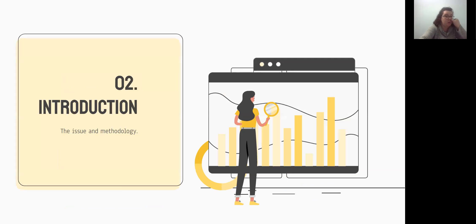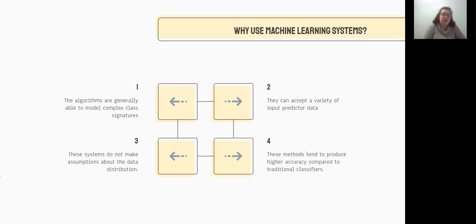So let's get into the introduction of the article. First, we are going to talk about why would someone want to use one of these systems? So one, the algorithms are generally able to model complex class signatures through their acceptance of a wide variety of predictor data. The systems don't make assumptions about the data distribution and they are able to produce more accuracy than traditional non-automatic classifiers. So with all of this good, especially the higher accuracy, what is stopping data scientists from using this all the time?